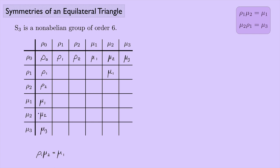Rotating twice (ρ₁ ∘ ρ₁) gives ρ₂, and ρ₁ ∘ ρ₂ brings us back to ρ₀. Similarly, ρ₂ ∘ ρ₁ = ρ₀ and ρ₂ ∘ ρ₂ = ρ₁. For the flips: μ₁ ∘ μ₁ = ρ₀, μ₂ ∘ μ₂ = ρ₀, and μ₃ ∘ μ₃ = ρ₀ — each flip is its own inverse. We already know ρ₁ ∘ μ₂ = μ₁, and μ₂ ∘ ρ₁ = μ₃.